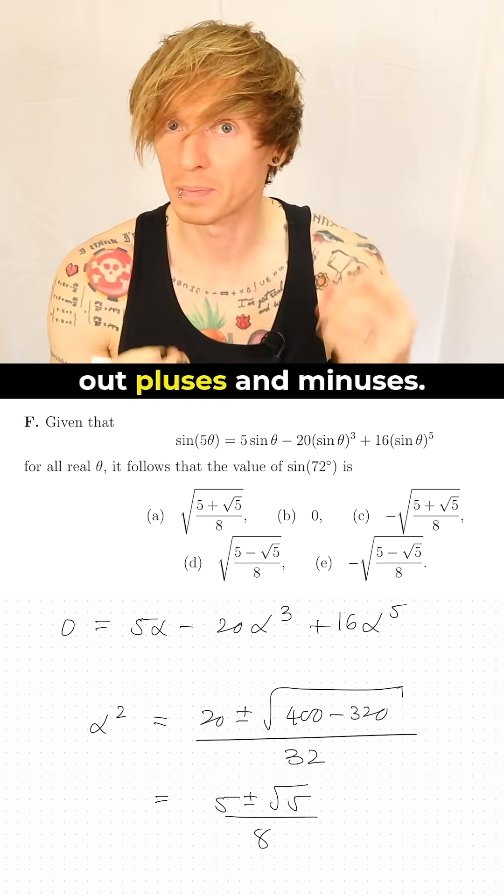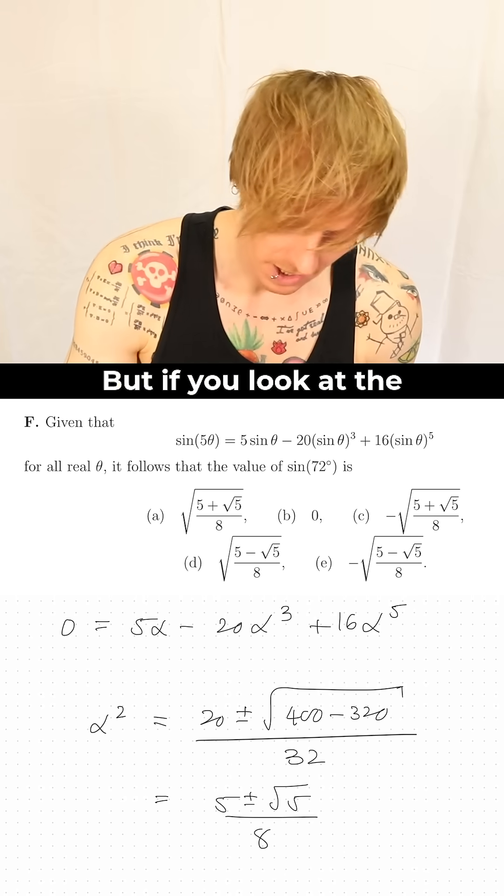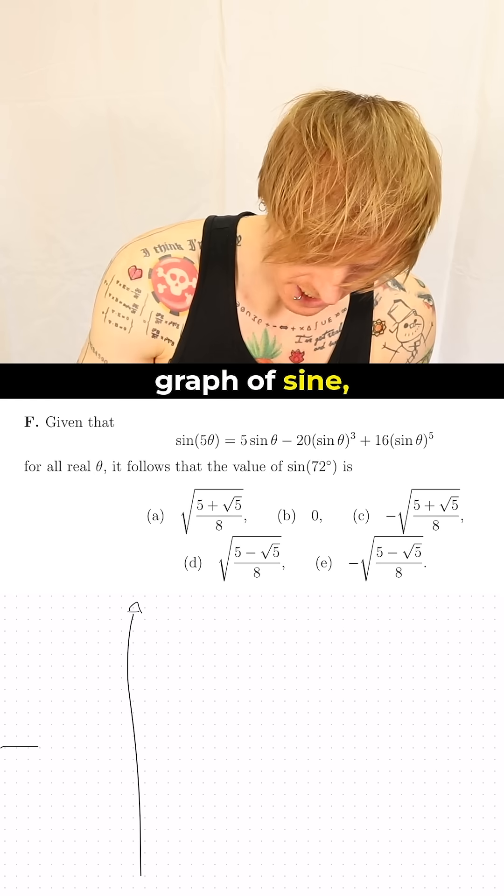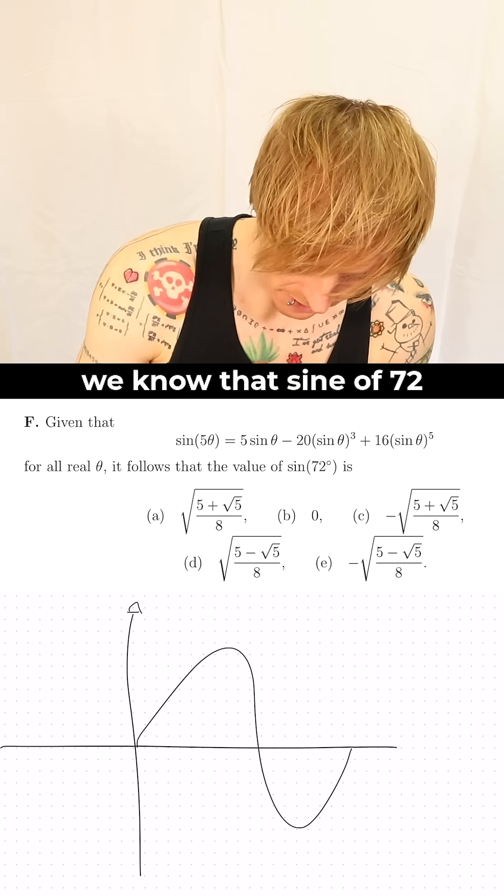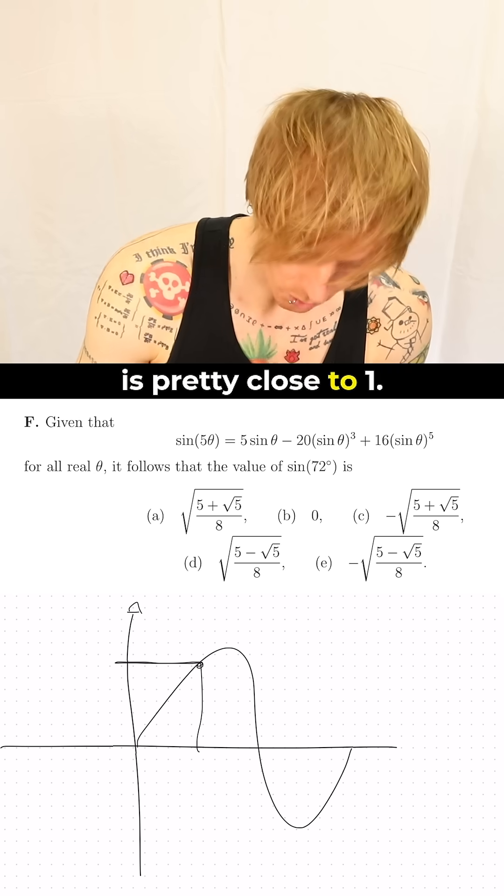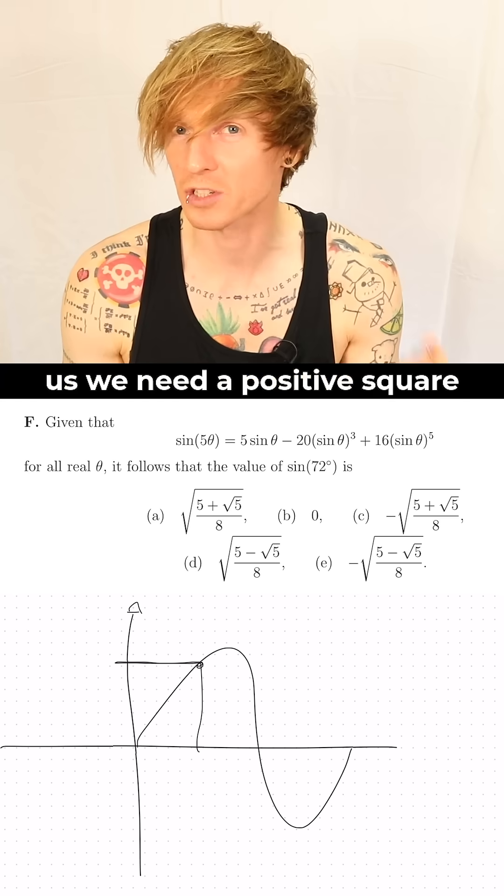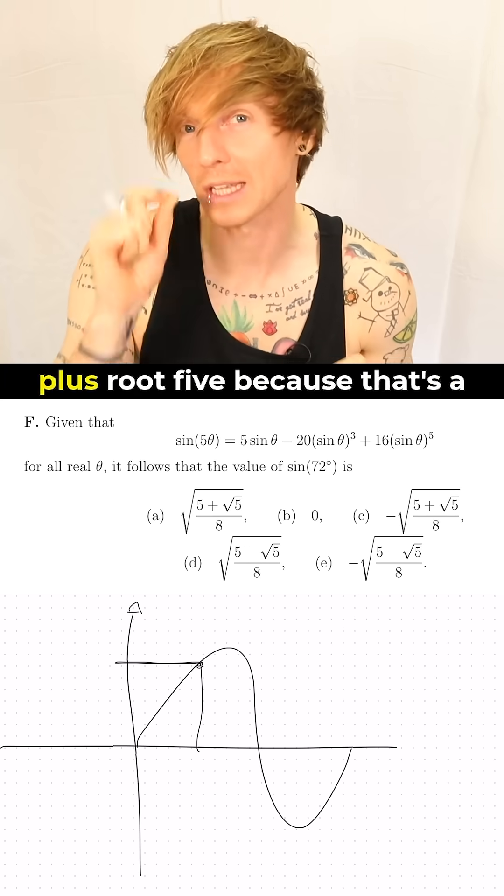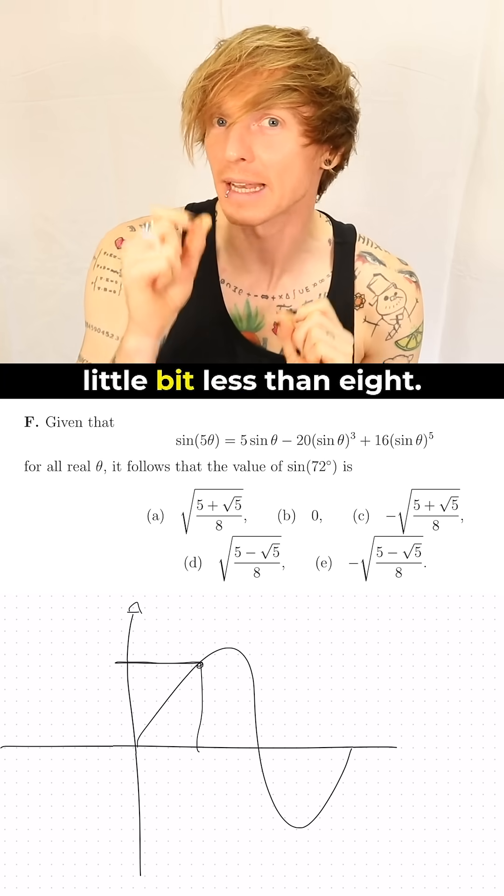So now we just have to work out pluses and minuses, we have to square root, but if you look at the graph of sine we know that sine of 72 is pretty close to 1, so that's actually going to tell us we need a positive square root and it's going to be 5 plus root 5 because that's a little bit less than 8.